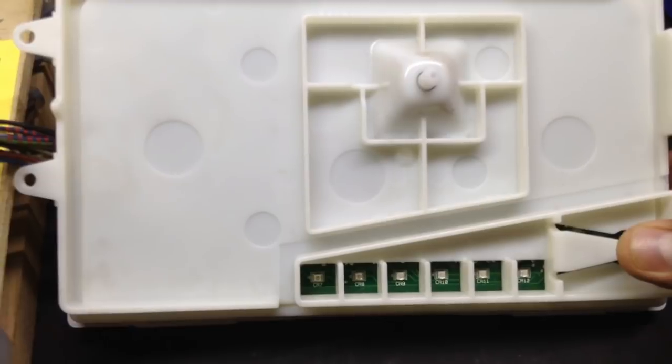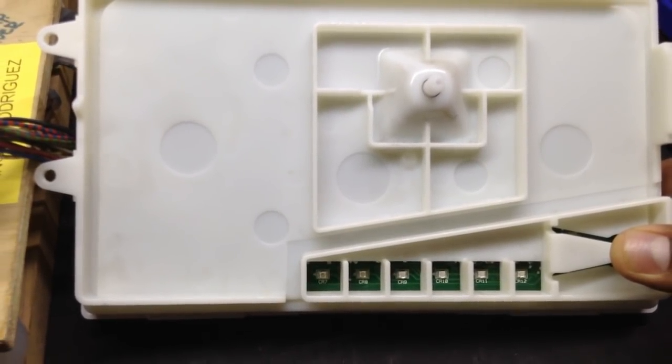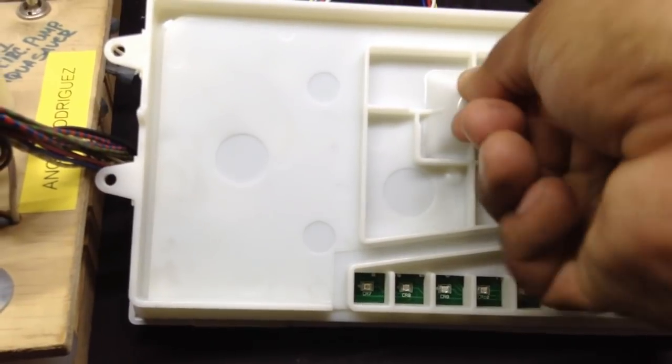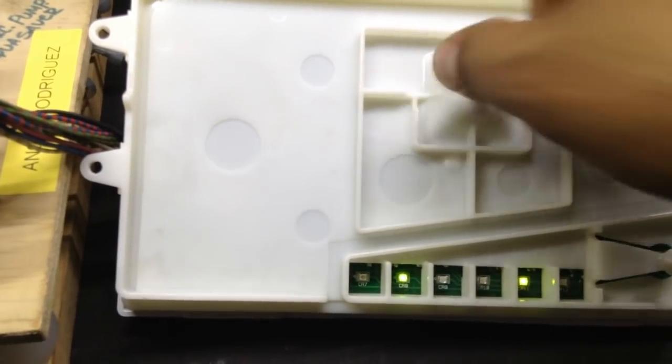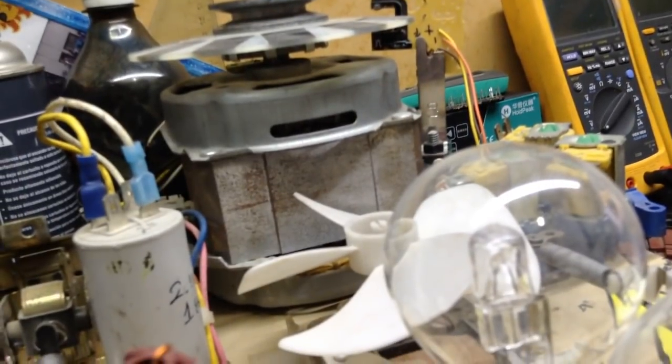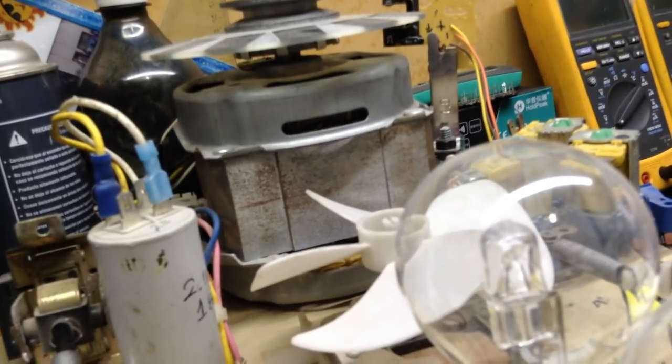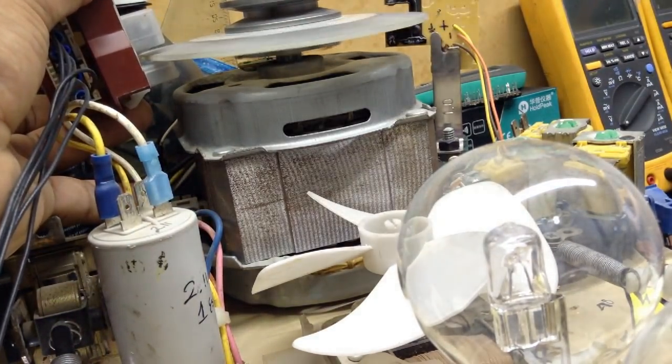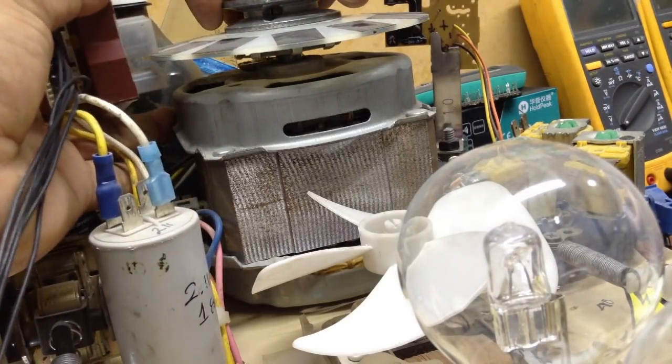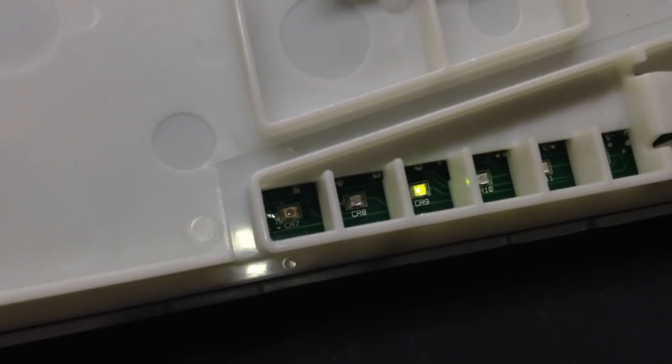Vamos a ingresar nuevamente al modo de prueba, menú 9. Damos inicio y vamos a hacer la prueba del tacómetro. Vamos a ponernos por aquí. Y vamos con el actuador, lo vamos a colocar por aquí y le vamos a dar vuelta de esta forma que cruce el haz de luz. Y vamos a ver acá los destellos de los LEDs, lo que les decía.